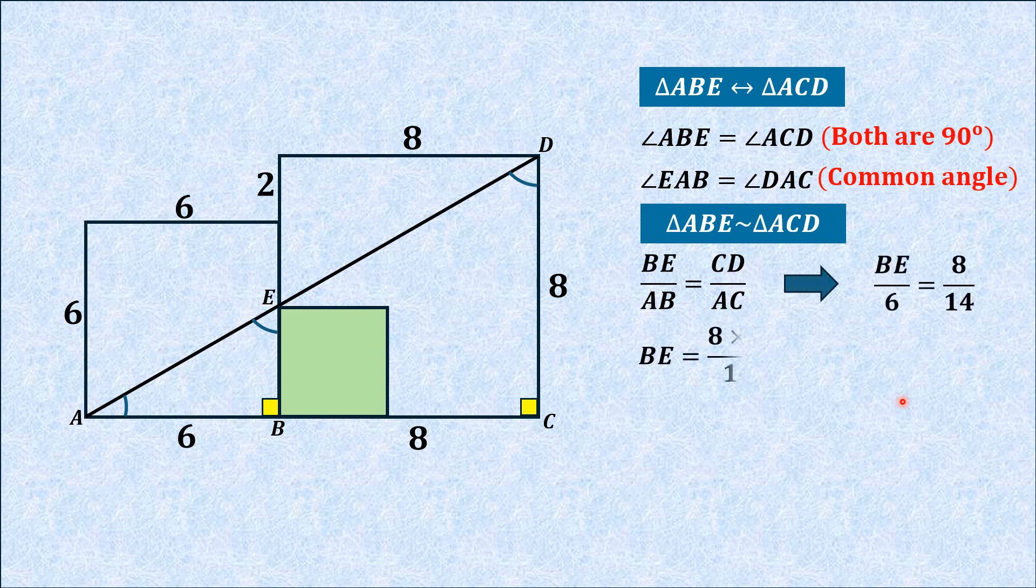Substituting all these values, BE equals 8 multiplied by 6 over 14, which simplifies to 24/7.